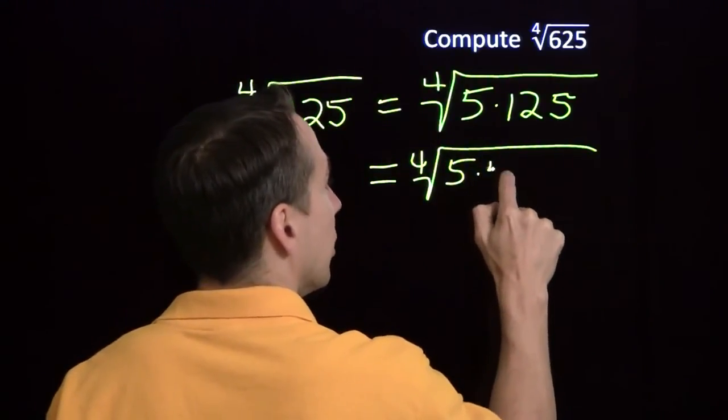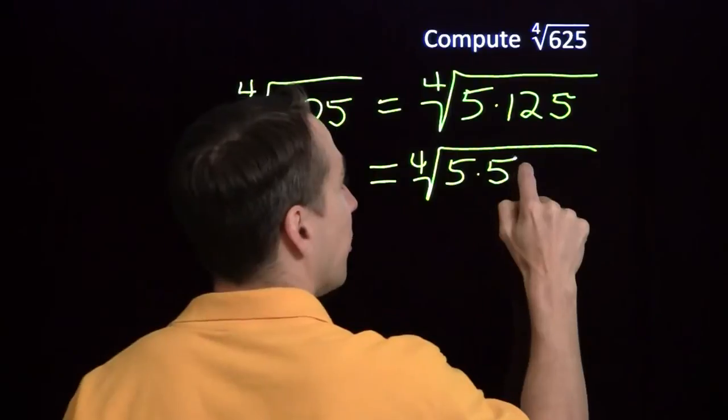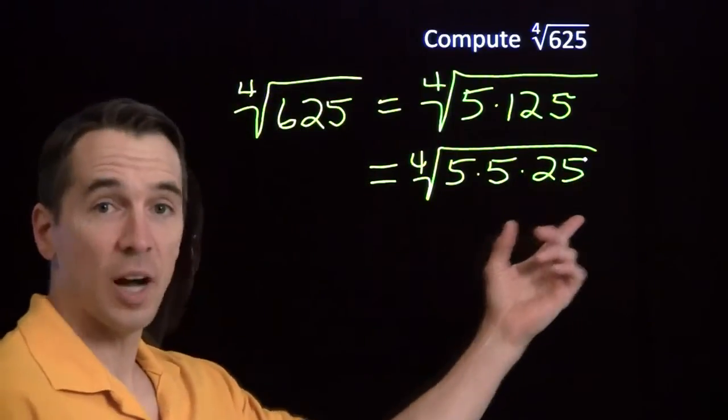And you can pull out another factor of 5. Maybe this is 5 times 5. Pull out a factor of 5 from 125, you'll have 25. And of course, that's 5 squared.